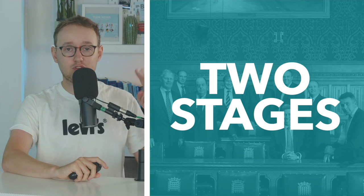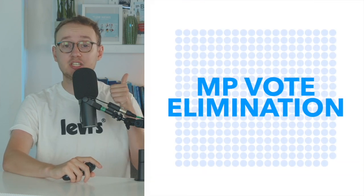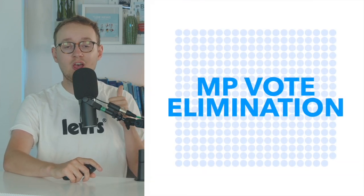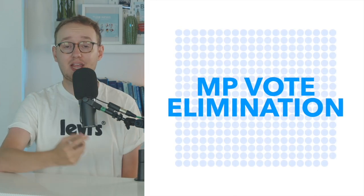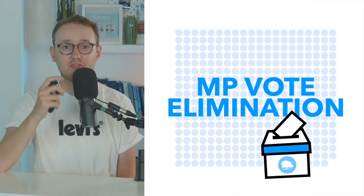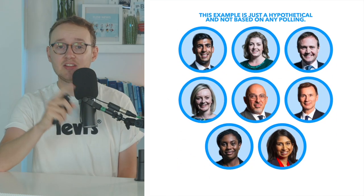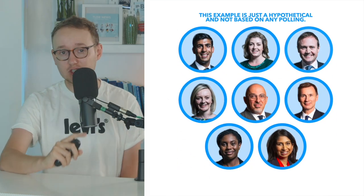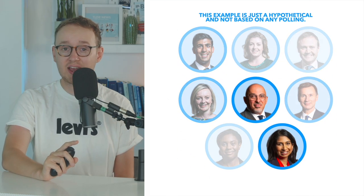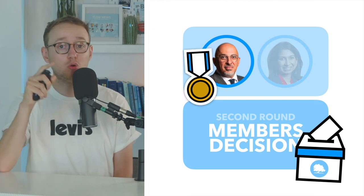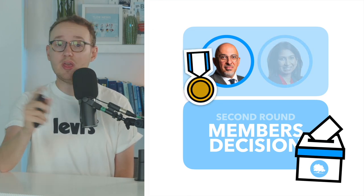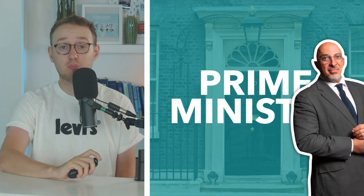Tory leadership campaigns have two stages: an elimination campaign through MPs' votes, and then a head-to-head members' vote. In the first stage, MPs vote in a secret ballot for their preferred candidate, and at the end of each round, the candidate with the least votes is eliminated until just two candidates remain. Those two are then put to the membership of the Conservative Party, and whoever wins that vote will become party leader, and with it, inherit the position of Prime Minister.